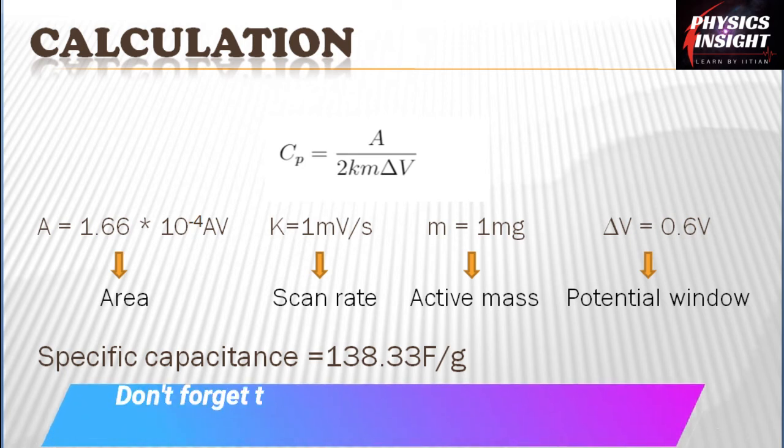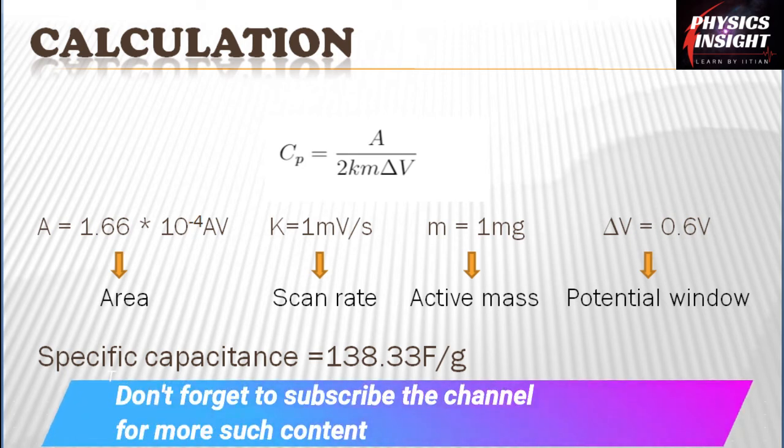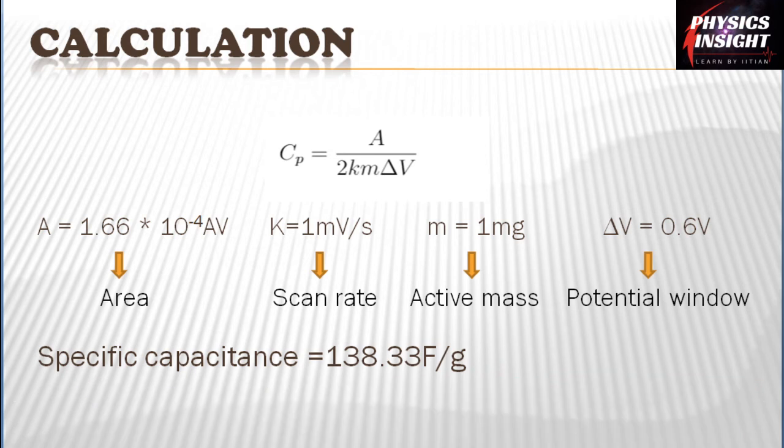ΔV is equal to 0.6 volt as we discussed. Putting all of these values in the expression, we get the specific capacitance equal to 188.33 farad per gram. So this is how we calculate the specific capacitance. Hope you like the video. Please don't forget to press the subscribe icon.